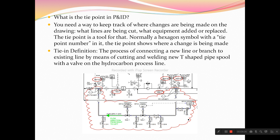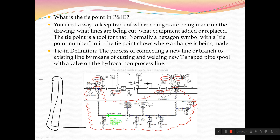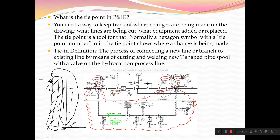What is the tie point in P&ID? You need a way to keep track of where changes are being made on the drawing. Wherever the P&ID is showing you the tie point line on the new connection, or showing demolition — if one line is getting demolished, it will show something in the P&ID. From this point it gives you a control assembly, and this point will become your tie point. From this point to this point is your new line.